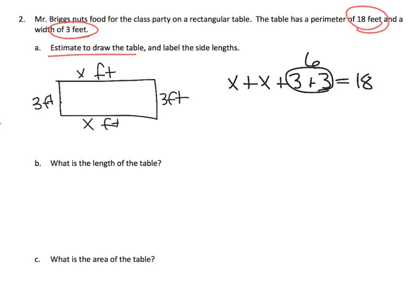Well, 3 plus 3 is 6, so that means x plus x has to be 12. Because 12 plus 6 has to equal 18. So if we know this part is equal to 6, that means this part has to equal 12. So x plus x has to equal 12. This length plus this length has to equal 12. Well, that means each one of those has to be a 6. And so now we know that the lengths are six feet, six feet, and the widths are three.